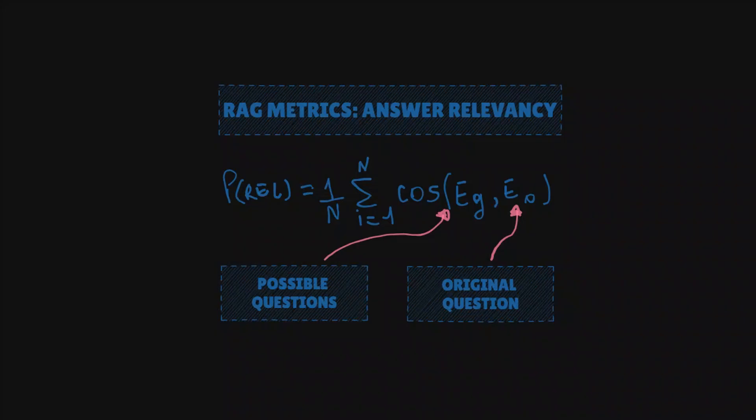So here's the formula for calculating answer relevance in a RAG system. We have p relevance that's going to be equals to 1 over N times the sum of the cosine similarity between the embeddings of the possible answers and the original questions.